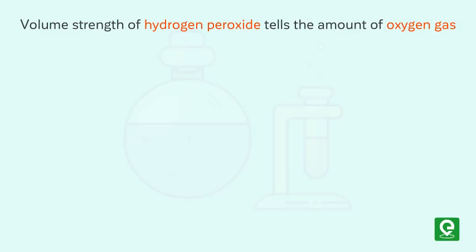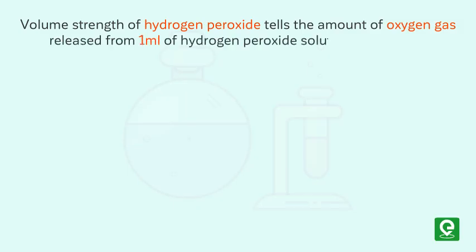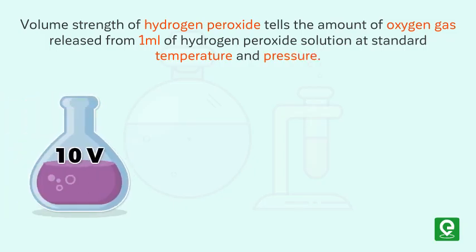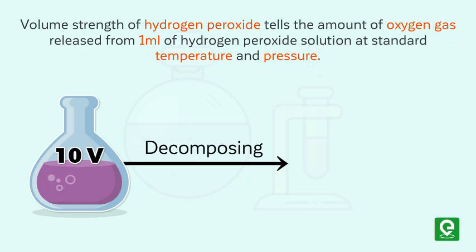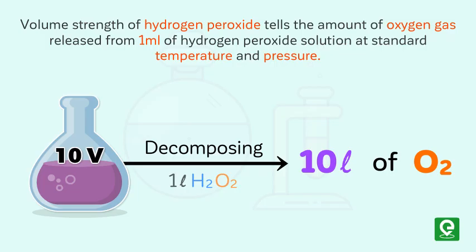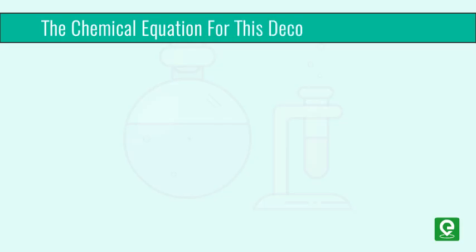Volume strength of hydrogen peroxide tells the amount of oxygen gas released from 1 ml of hydrogen peroxide solution at standard temperature and pressure. If a H₂O₂ solution is labeled 10 V, this means that decomposing 1 liter of that solution will give 10 liters of O₂, and decomposing 1 ml of it will give 10 ml of O₂.